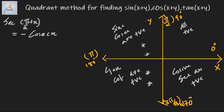Let us move on to some more examples. We have to find tan(2π + x). As you can see, 2π + x lies in the first quadrant itself, and in the first quadrant all trigonometric functions are positive, so the final result will be positive.